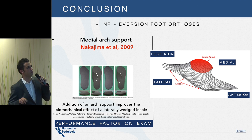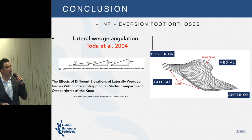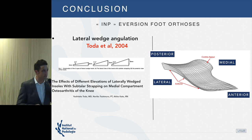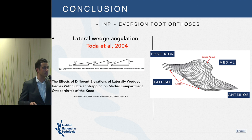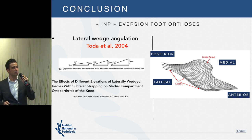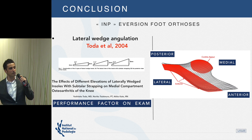Here you can see the medial arch support. The fourth and final characteristic is angulation. For grade 2 or grade 3 osteoarthritis on the Kellgren-Lawrence classification, sufficient angulation is needed for good EKAM performance. Research by Toda showed that greater angulation produces better reduction of the EKAM.